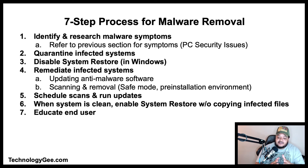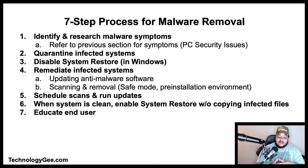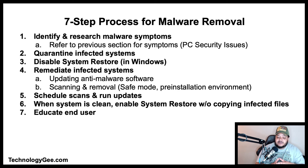Step four is to remediate the infected files. Use a different computer to change passwords for network access, e-commerce, and social media. Perform data backups in case the system has to be reformatted, and check the backup for malware before reinstalling it. To update anti-malware on a quarantined system, download offline update files on a different system, copy them to a USB flash drive, install the updates on the quarantined system, then run scans and remove threats in Safe Mode or the Windows Recovery Environment.